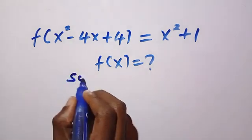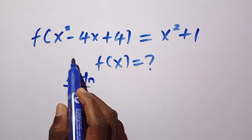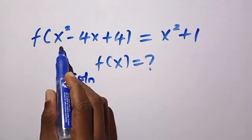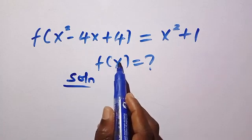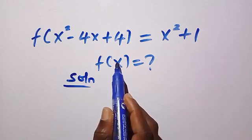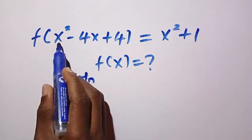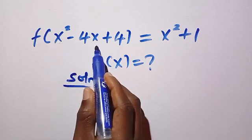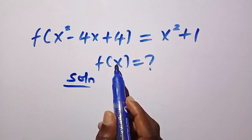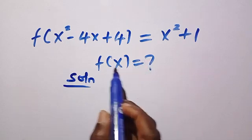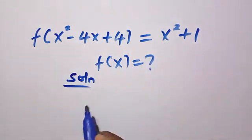Let's see how we solve this. We have this domain x squared minus 4x plus 4, and I want to reduce this to only x. No matter what value we plug in, this domain is always greater than x, so we expect to get a function that's less than the output of the given function.